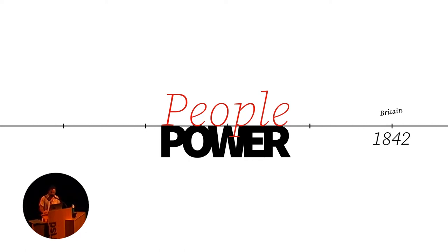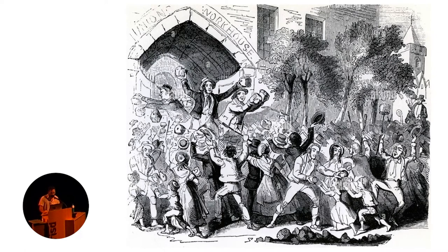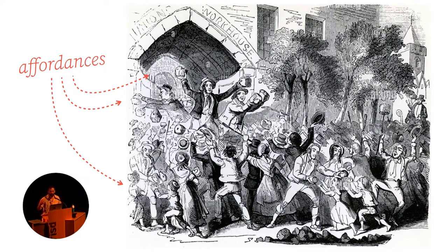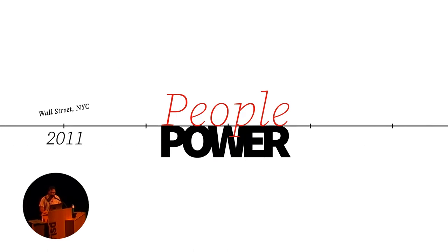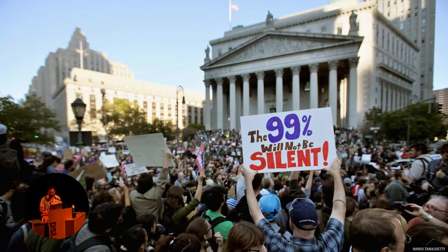Let's move forward to 1842, Britain. The Industrial Revolution changed the affordances of power - this marked the first general strike in history. Less hands on the machines means more power, less power for the industrialists to produce. The more people you get on your side, the more power you get. Fast forward to 2011, Wall Street, NYC. At the gates of the Wall Street Stock Exchange - is this gate presenting friction? Is the protest demonstrating people power? Where are the affordances?